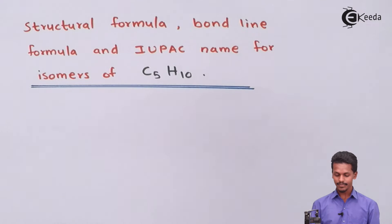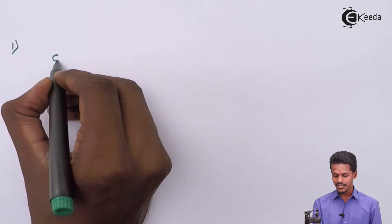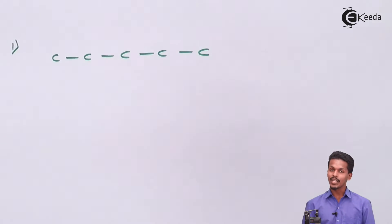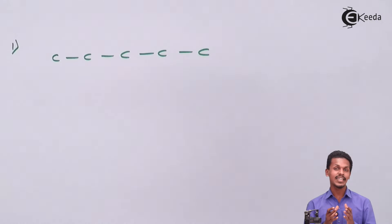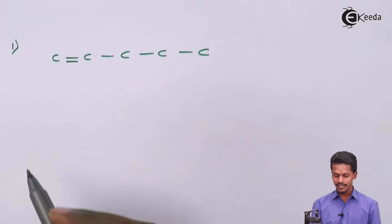Let us start with the first isomer having molecular formula C5H10. We consider a straight chain without any branching, consisting of five carbon atoms in a straight chain: one, two, three, four, five. Since the molecular formula is C5H10, it clearly indicates this is an alkene with only one double bond, which can be placed on the first carbon.